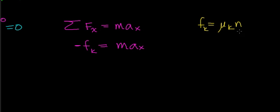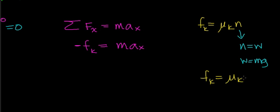We already found that the normal force equals the weight of the car, and weight equals mass times gravitational acceleration g. So we can rewrite the kinetic friction force as: F_k = mu_k times mass times g. This is a special case for a horizontal surface — if the surface were not horizontal, the normal force would not equal mg.